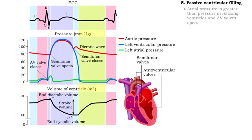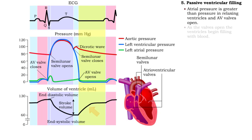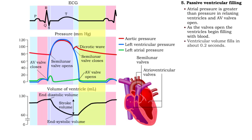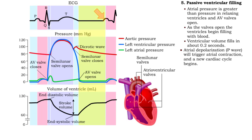Ventricular filling occurs as all four chambers of the heart are relaxed and the AV valves open. As the valves open, the ventricles begin filling with blood. In about two-tenths of a second, blood that has been building up in the atria rushes in to fill the ventricles. Atrial depolarization triggers atrial contraction, forcing a small amount of extra blood into the ventricles. And a new cardiac cycle begins.